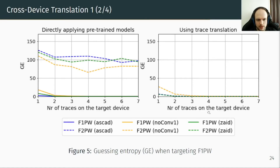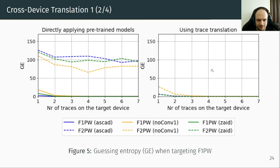This graph shows the guessing entropy when targeting F1 power. On the left, we have when we directly apply the pretrained model; on the right, when using trace translation. Different colors represent the different networks: ASCAD, ZAID, and NOCONV. Dotted lines represent training with F2 power; solid lines represent training with F1 power. We observe that the best performance with the pretrained model is obtained with channel F1 power. The performance of ASCAD, NOCONV, and ZAID with channel F2 power can be improved by using trace translation, and similar performance is observed when combining pretrained network with trace translation.